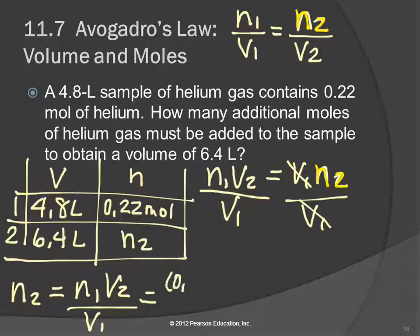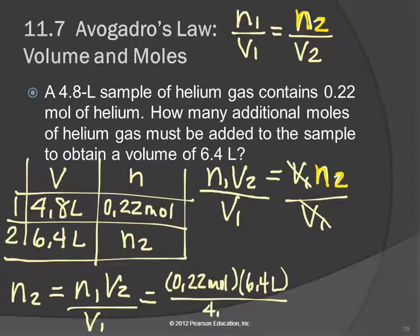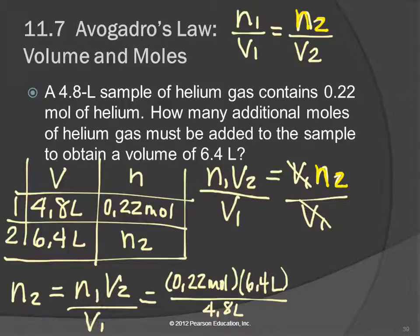N1 was 0.22 moles, V2 is 6.4 liters, and V1 is 4.8 liters. I took the numbers out of the question and put them in the table. You find an equation with these variables, rearrange it to isolate the one you're looking for, then plug in the numbers. Using the calculator: 0.22 times 6.4 divided by 4.8. This problem has two significant figures, so the answer is 0.29 moles.